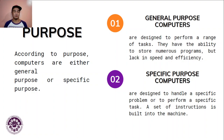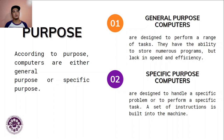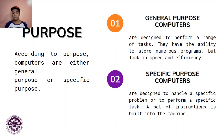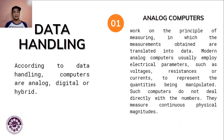A set of instructions is built into the specific purpose machine, making it very efficient and much faster than general purpose computers. A very good example is a calculator — it is only limited to computing instructions like adding, subtracting, multiplication, and division. It only deals with equations and is a great example of a specific purpose computer.